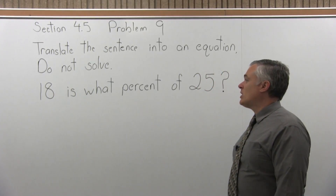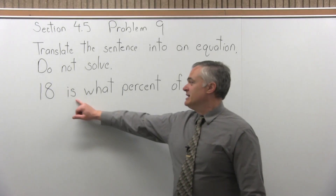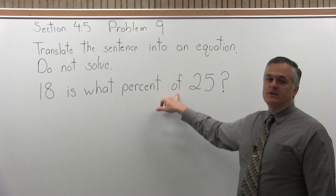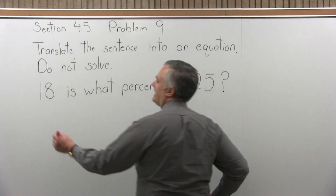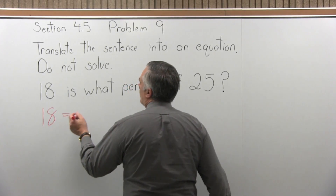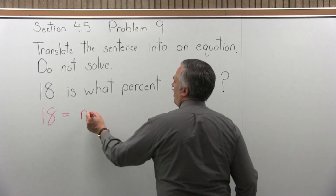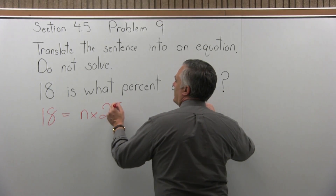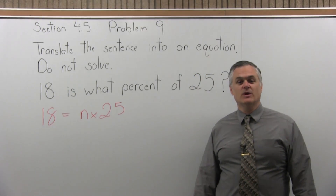And we have: 18 is what percent of 25? The keywords are 'is', which gets changed to an equals sign, and 'of', which gets changed to multiply or times. So 18 is becomes 18 equals, what percent we can just call n, and then of means times 25. So 18 equals n times 25 says the same thing as an equation.